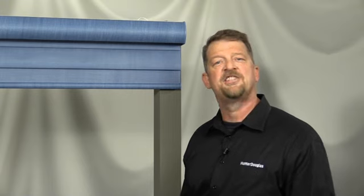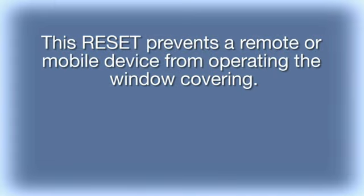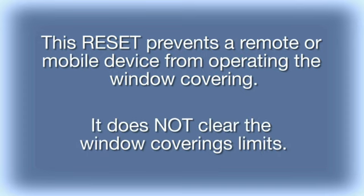On the second jog, all programming has been cleared and you may release the manual control button. This reset prevents a remote or mobile device from operating the window covering. It does not clear the window covering's limits.